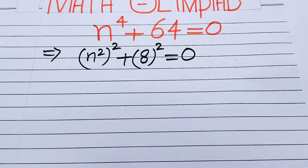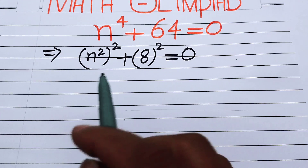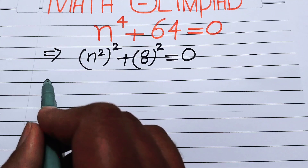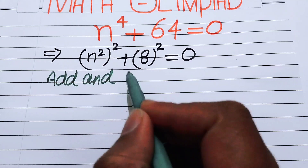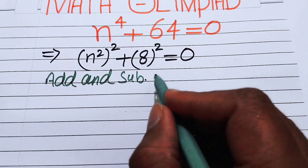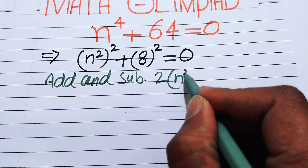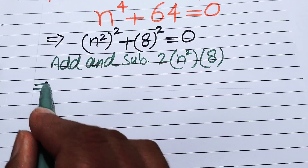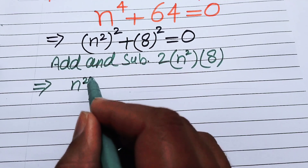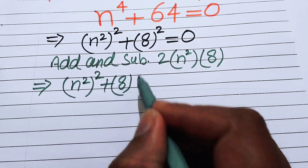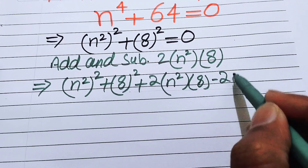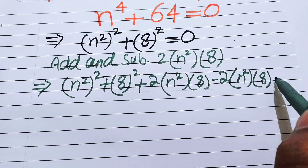In the next step we need to complete the square of this equation. To do so, we add and subtract 2 times n² times 8 on the left-hand side only. This gives us (n²)² + 8² + 2·n²·8 − 2·n²·8, and this whole equation equals 0.